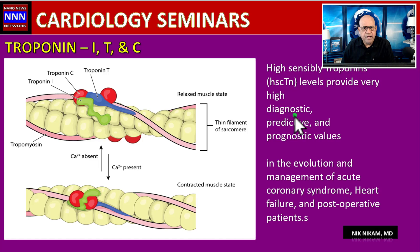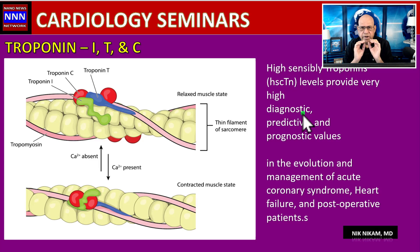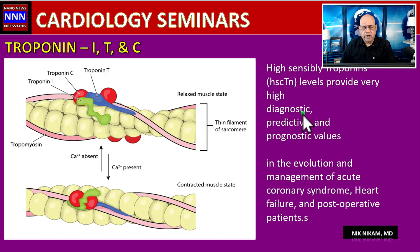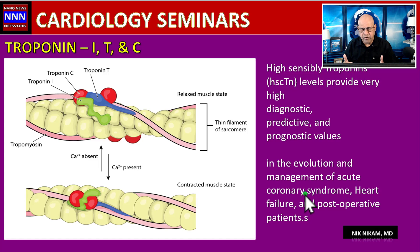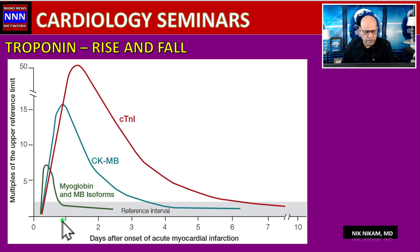Most importantly, high-sensitivity troponin levels have very high diagnostic, predictive, and prognostic values. Most of us think troponin is only for diagnosing, but in reality it is useful for predicting outcomes and prognosticating — based on the troponin levels, what can we expect in the coming days and weeks in patients with acute coronary syndromes, heart failure, or post-operative cardiac problems? This is not only useful in acute coronary syndrome; it is also useful in ongoing heart failure and in the post-operative phase.